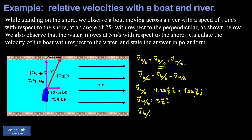So the velocity of the boat with respect to the water — given by this vector difference — is 1.23 m/s in the x-direction plus 9.06 m/s in the y-direction. That's one way of writing the answer, but since we need polar form, we have a little more trig to do.